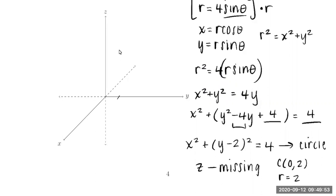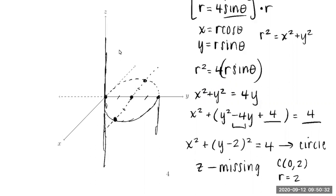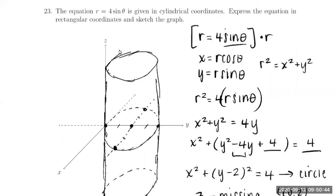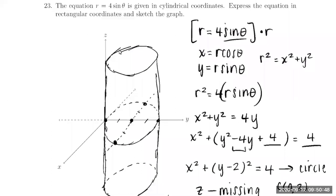Let's plot that in the xy-plane. Going out 2 along the y-axis for the center, with radius 2, I sketch in this circle — solid in front and dashed in back — then extrude vertically upward and downward, adding some mesh lines to give more dimension. And we can see why this is called cylindrical coordinates — we're creating a cylinder in this case.